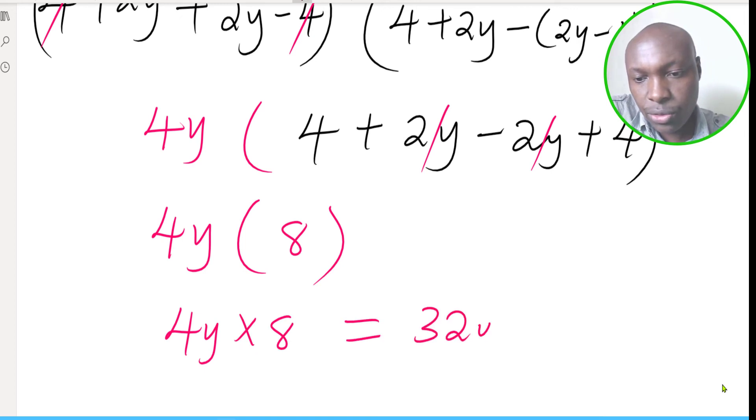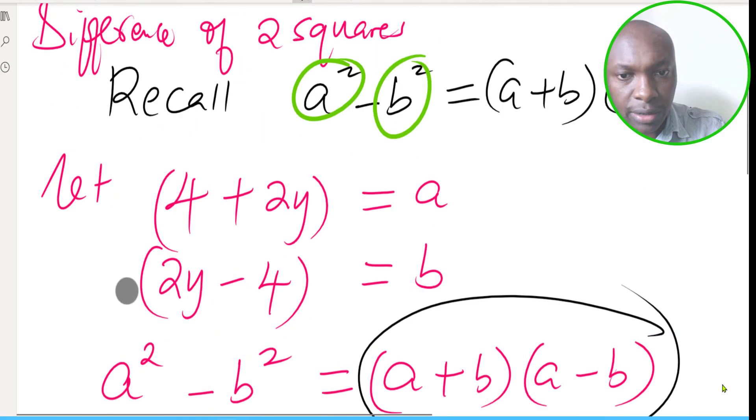Which gives 32y, and that is how you're supposed to simplify that quadratic expression.